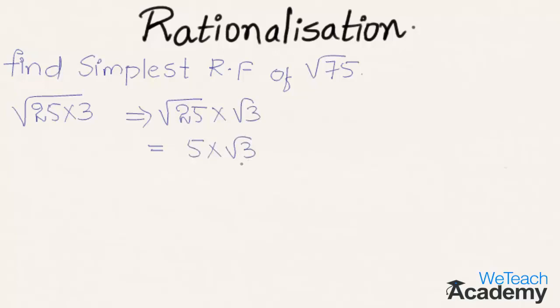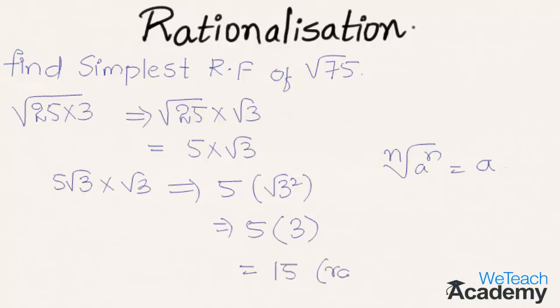Now let us multiply 5 root 3 into root 3. We get the result as 15, which is a rational number. So root 3 is the simplest rationalizing factor of root 75.